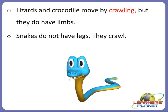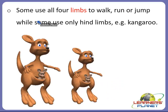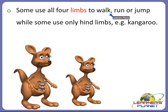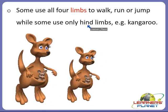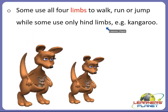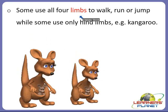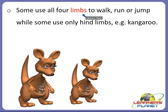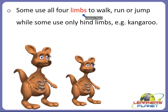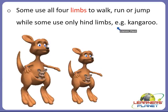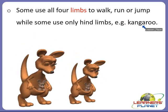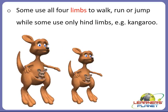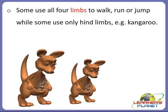Some animals use all four limbs — both fore and hind — to walk, run, or jump, while some use only the hind limbs. For example, kangaroos use only hind limbs for movement, as you can see in this picture.